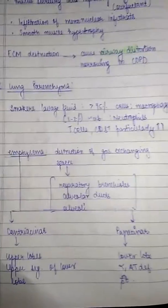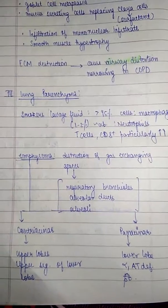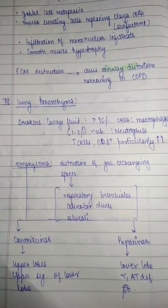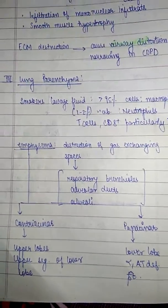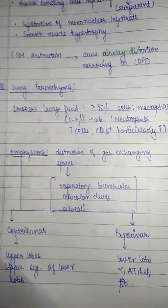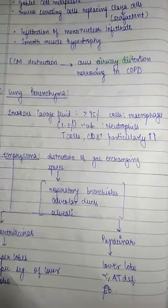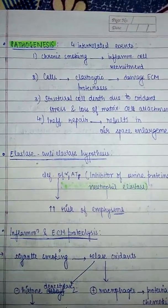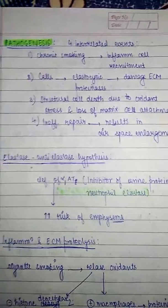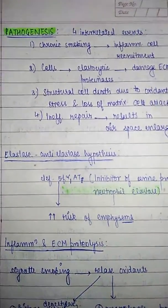Emphysema is the destruction of gas-exchanging spaces: respiratory bronchioles, alveolar ducts, and alveoli. It can be centriacinar or panacinar. Centriacinar occurs in the upper lobes or the superior segments of the lower lobes. Panacinar occurs in the lower lobes and is most commonly due to alpha-1 antitrypsin deficiency.